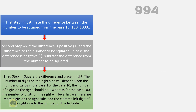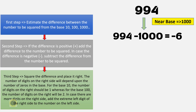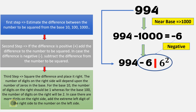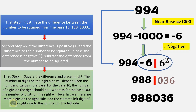Now let's consider the final example: find the square of 994. The base nearer to 994 is 1000, and the difference is 994 minus 1000, which equals minus 6. Since the difference is negative, subtract the difference from the number to be squared — this becomes the left part of the solution. Square the difference and place it on the right. Since the base is 1000, there should be 3 digits on the right, so 36 is written as 036. Combining the numbers, the square of 994 is 988036.